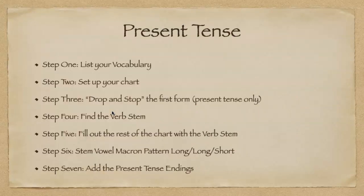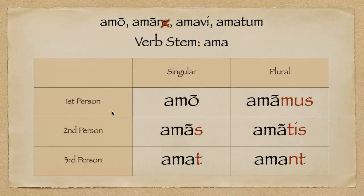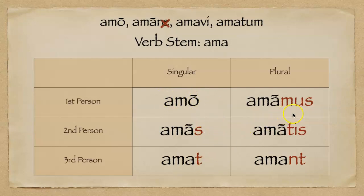Step seven: we're going to add your present tense endings. A common mistake is sometimes people will want to put another O here — we don't do that. Remember that step was 'drop and stop,' not drop, stop, and add something later. If we have an extra O there, it's going to look and sound weird. The endings are O-S-T-mus-tis-unt. The song I use with my students: O-S-T-mus-tis-unt, O-S-T-mus-tis-unt. The Latin present endings are O-S-T-mus-tis-unt.